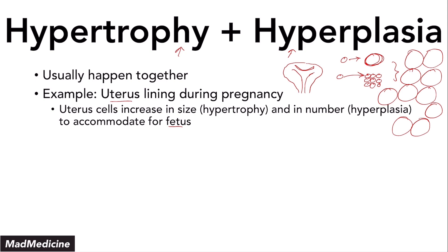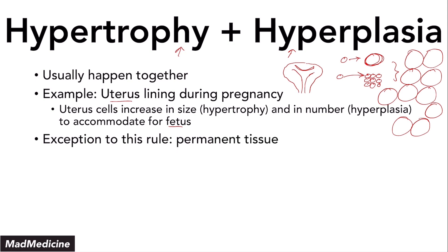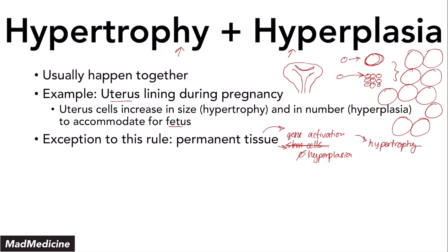When it comes to hypertrophy and hyperplasia, these conditions often happen together. However, there are certain exceptions — permanent tissue. Permanent tissues do not have any stem cells. Therefore, they cannot go through hyperplasia because there are no stem cells to create more cells. The only pathway available when they are put under a lot of stress is the gene activation pathway — hypertrophy. That is the basis of why permanent tissues undergo hypertrophy and not hyperplasia. They just don't have stem cells.